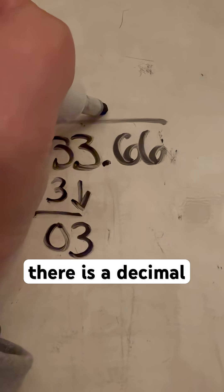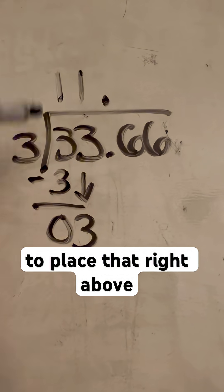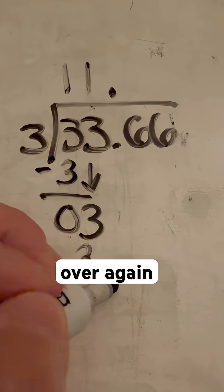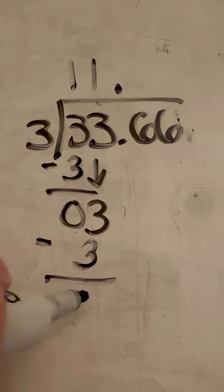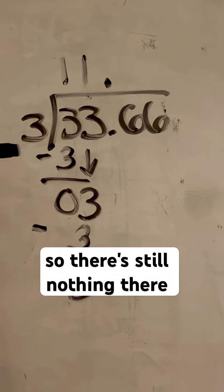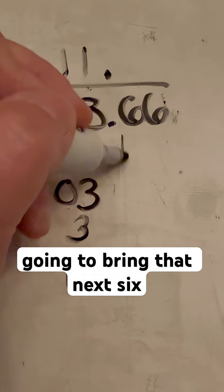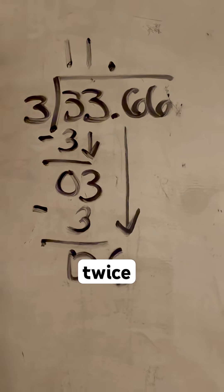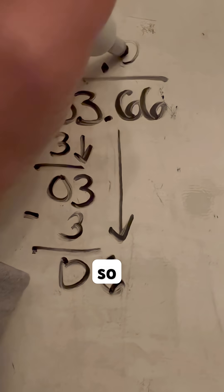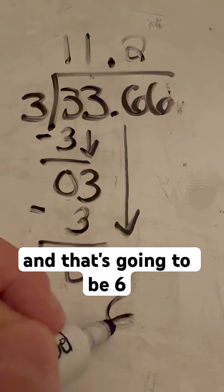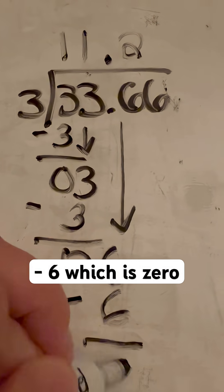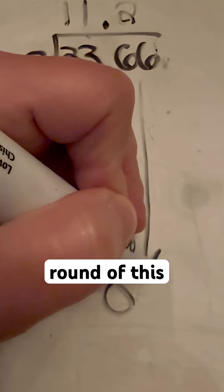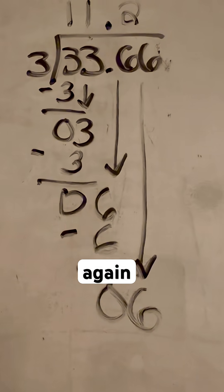There is a decimal right after that so we're going to place that right above that. And then we're going to do the same thing over again — 3 minus 3 is 0, so there's still nothing there. We're going to bring that next 6 down. 3 goes into 6 only twice. So we're going to put 2 there and that's going to be 6 minus 6, which is 0 again. And then our final round of this is the 6 again.